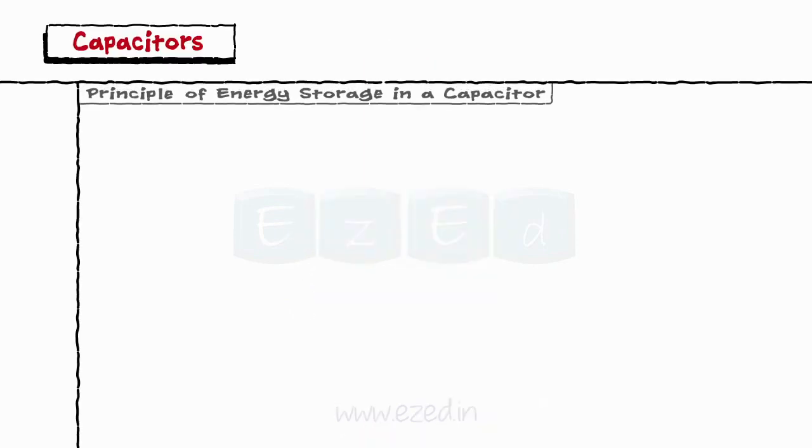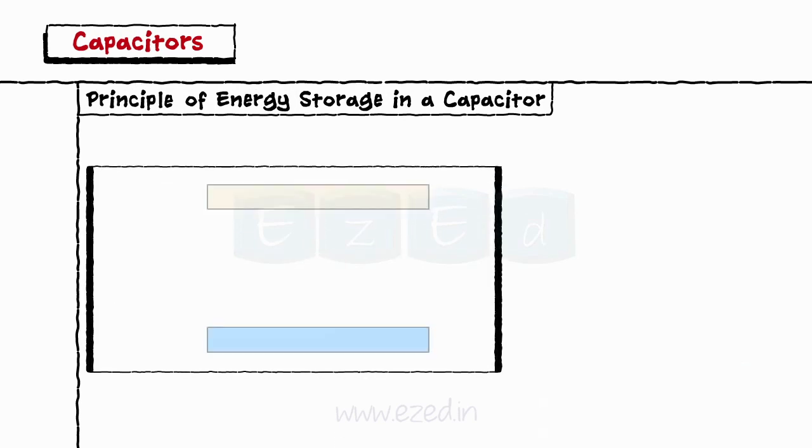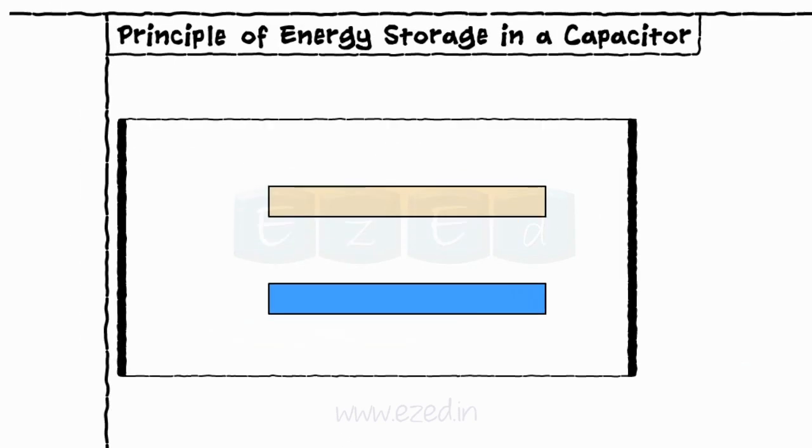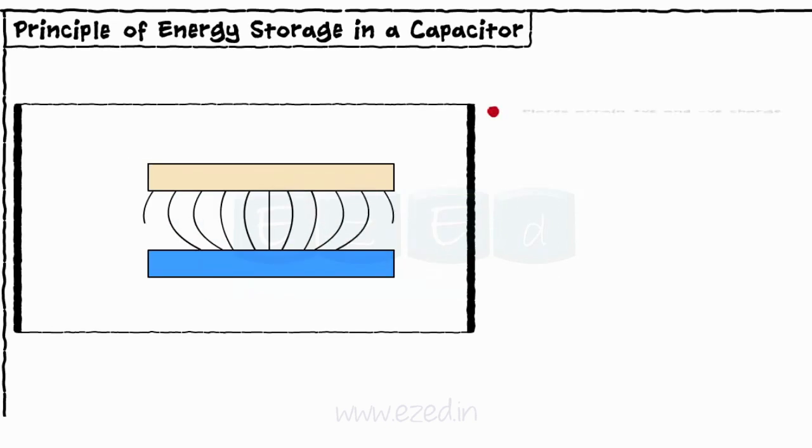A capacitor is constructed by keeping two conductors of the same material parallel to each other. When a voltage is applied, the plates attain a positive and a negative charge.